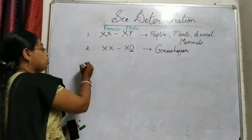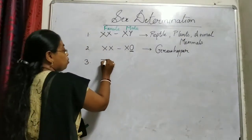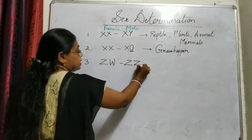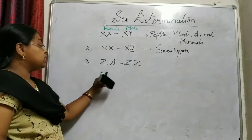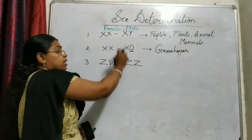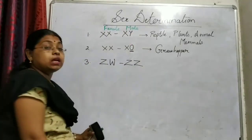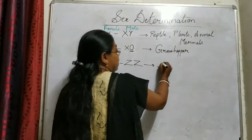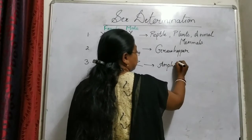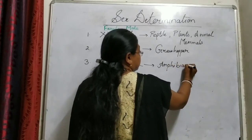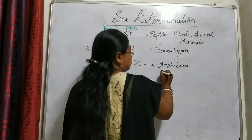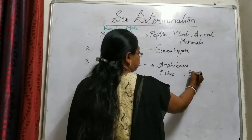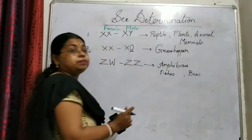The third variety of system is known as the ZW and ZZ system. ZW is the female and ZZ is the male. This type is found in amphibians, some fishes, bees, and so on.